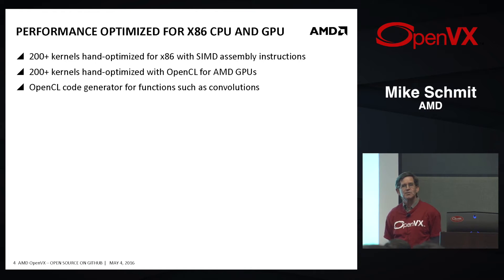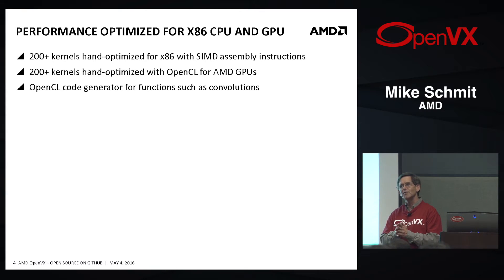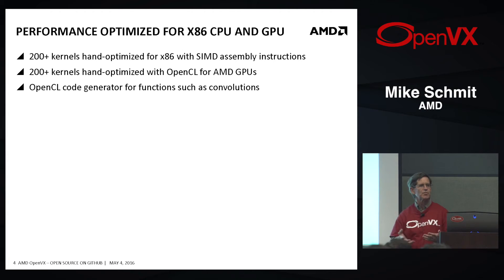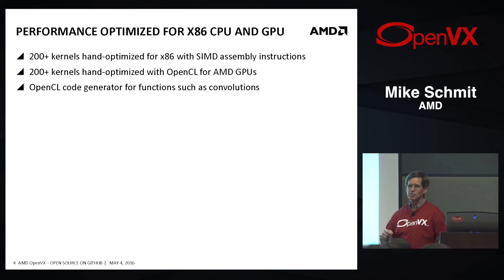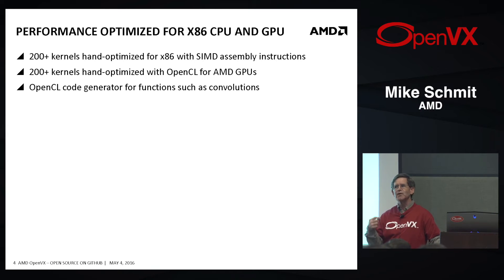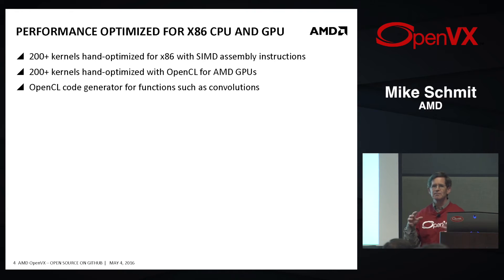Starting the implementation, there are over 200 functions. There are the 41 basic functions that Khronos defines, and we broke those down into different data types and different kinds of parameters, giving us over 200 versions of each for CPU and GPU. We also have a code generator for OpenCL, so we're able to dynamically compile new OpenCL code for your specific graph.